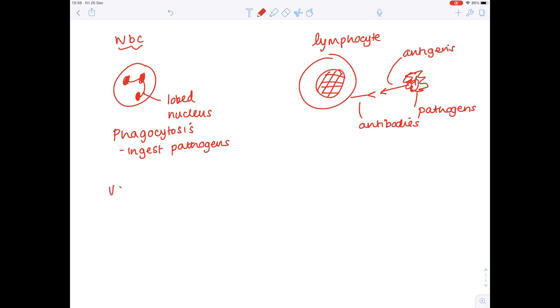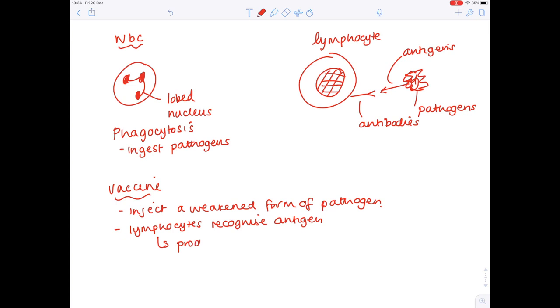How does a vaccine work? It's very similar. This time you are injecting a weakened form of the pathogen. You can say again that the lymphocytes recognize the antigen. They produce antibodies. Crucially, some of these lymphocytes turn into memory cells and upon re-entry of the pathogen.